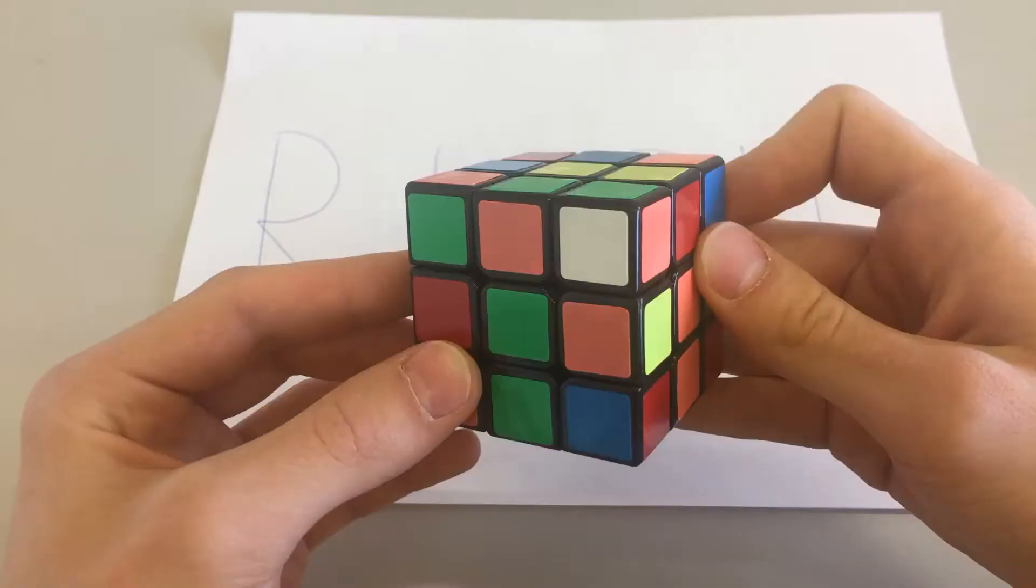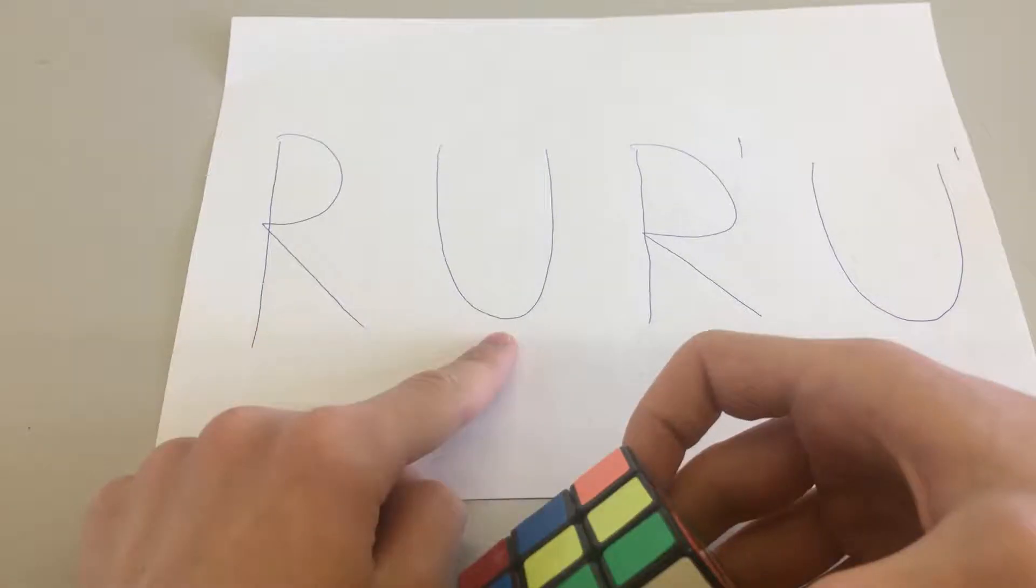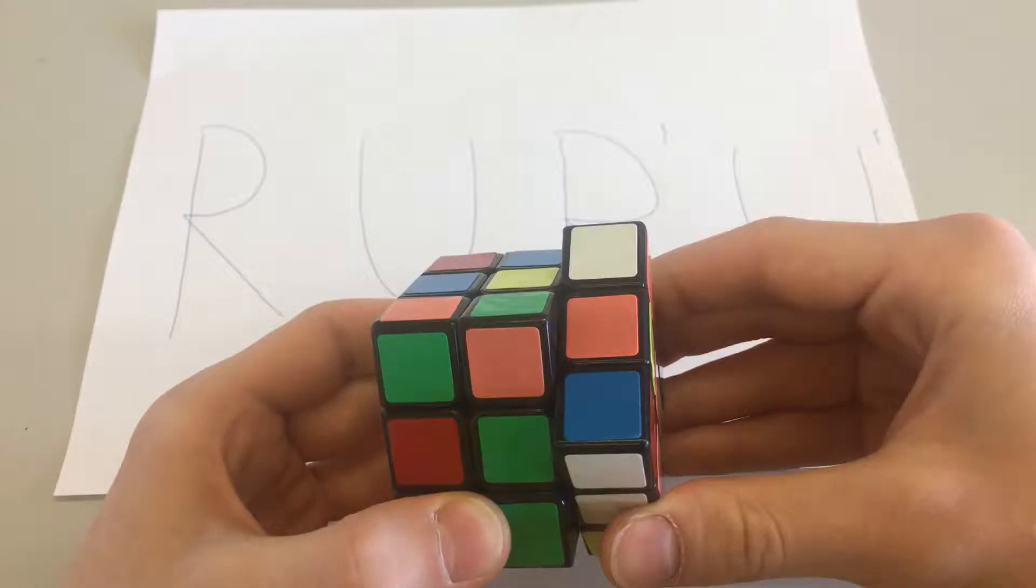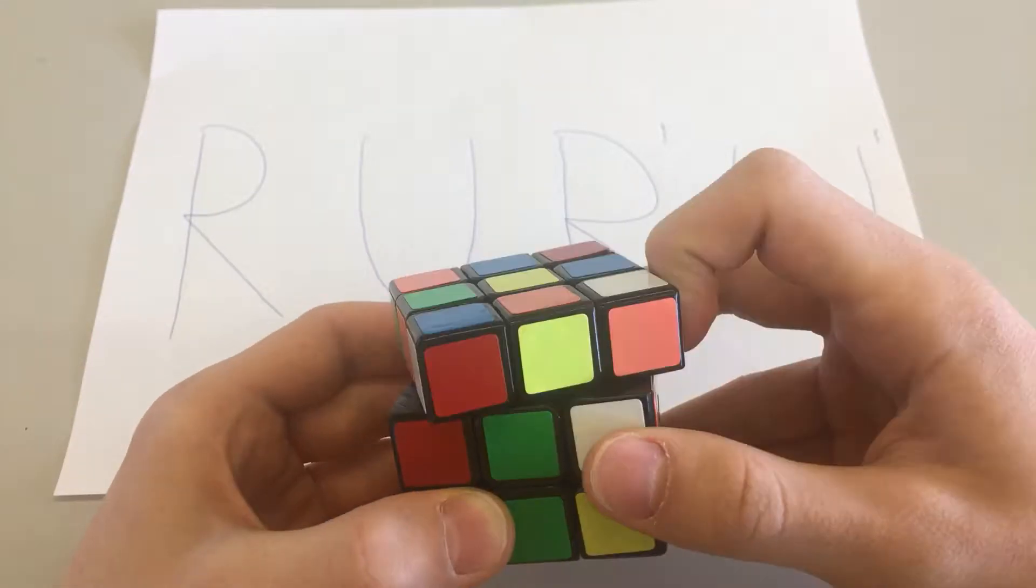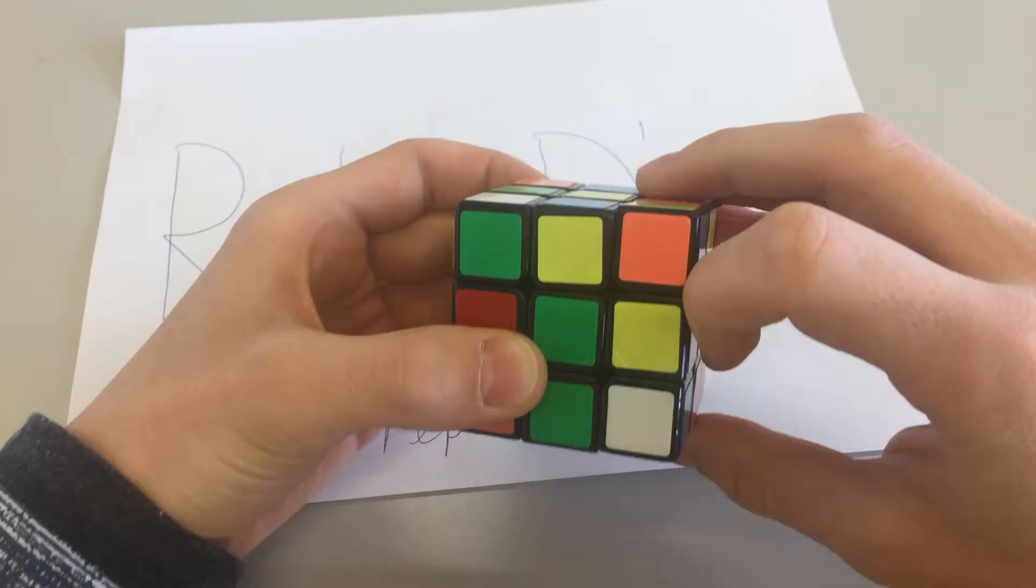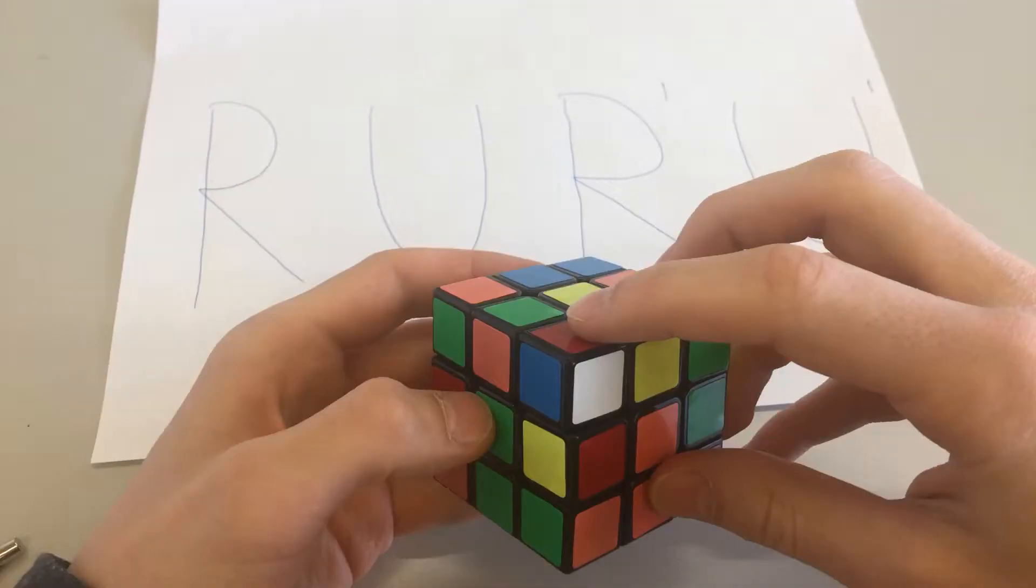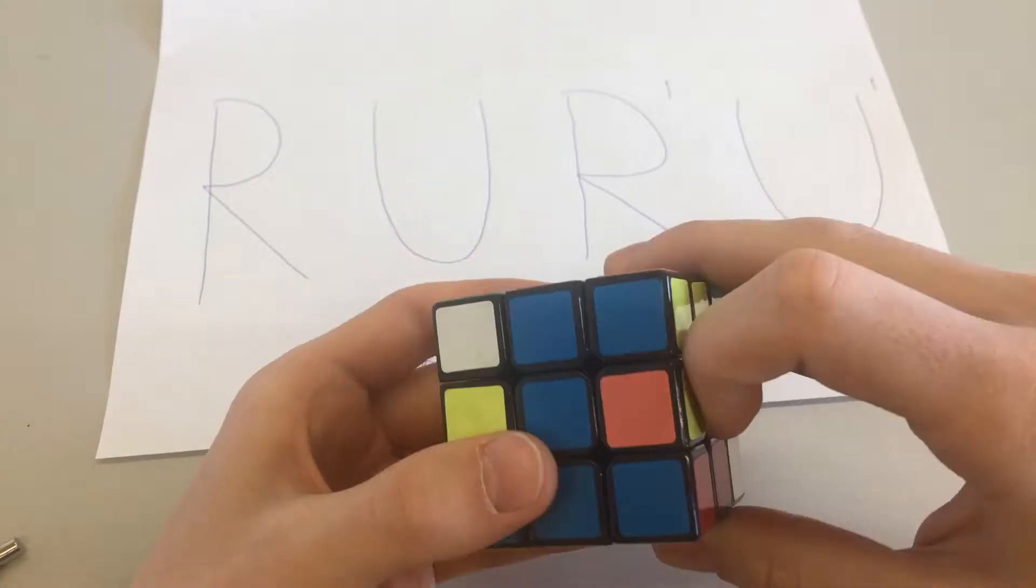The next thing is corners. For that, you need one simple formula: R, U, R apostrophe, U apostrophe. You adjust the piece until it's above the needed corner, and then keep repeating the formula until the piece is in the place. Do it with all the 4.